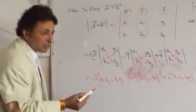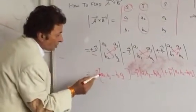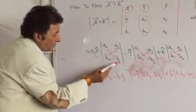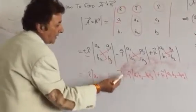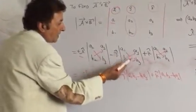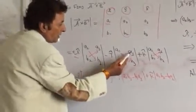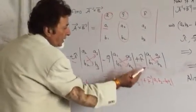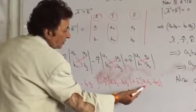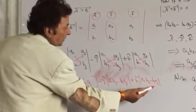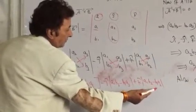Simple cross multiplication: i cap gives a2·b3 minus b2·a3; then minus j cap gives a1·b3 minus b1·a3; then similarly, k cap gives a1·b2 minus b1·a2.